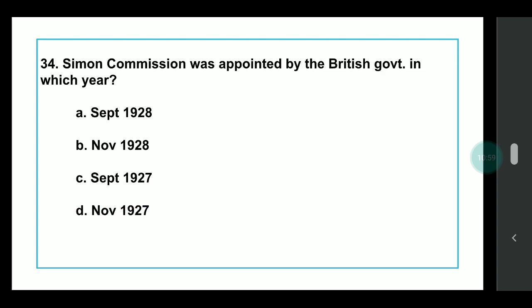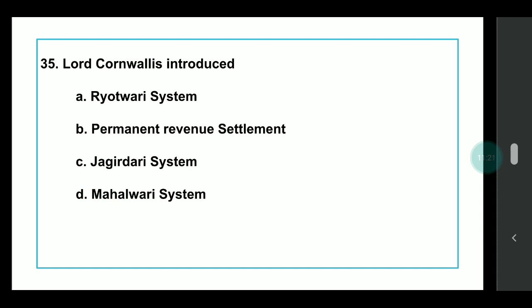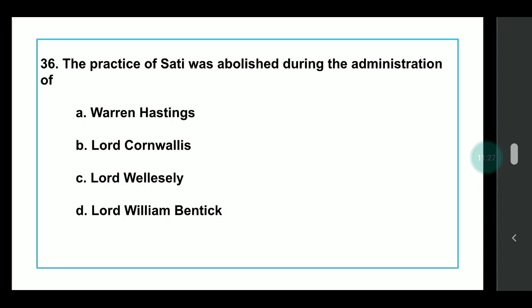Q31: The Simon Commission was appointed by the British Government in which year? Answer: November 1927. It was appointed for reforms in India and was opposed because not a single Indian was present in it. Q32: Which system did Lord Cornwallis introduce? Answer: The Permanent Revenue Settlement System. Q33: The practice of Sati was abolished during the administration of which Governor General? Answer: Lord William Bentinck.